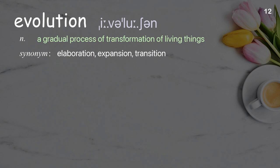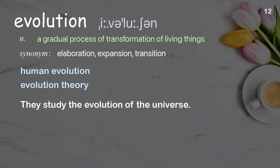Evolution: A gradual process of transformation of living things. Examples: human evolution, evolution theory. They study the evolution of the universe.